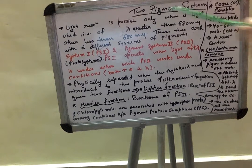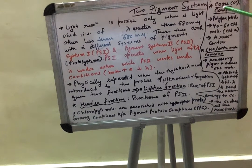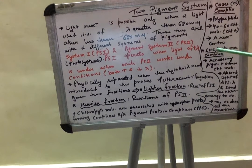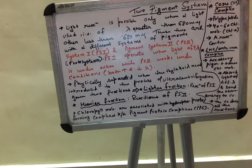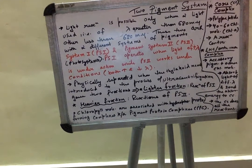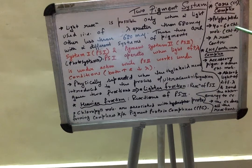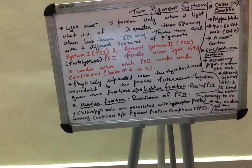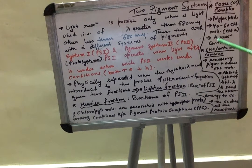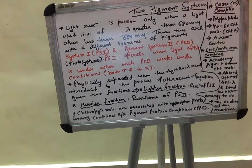The two pigment systems have two main parts: first, the core complex, and second, the light harvesting complex or LHC, also called the antenna complex. These two parts are found in both PS1 and PS2. The core complex is basically a polypeptide having 40 to 60 chlorophyll molecules — specifically chlorophyll a molecules — and is also known as the reaction center.